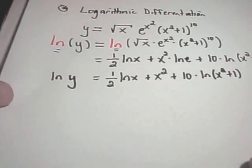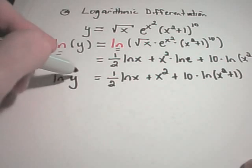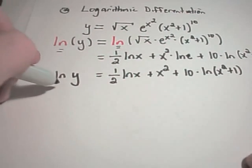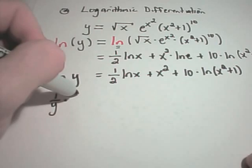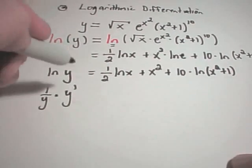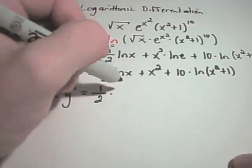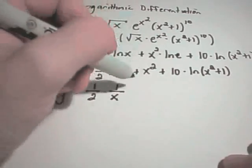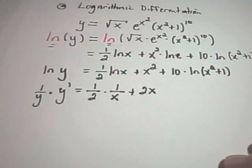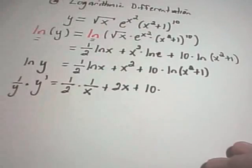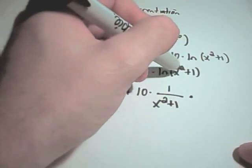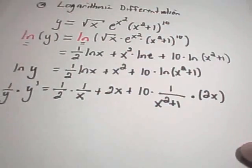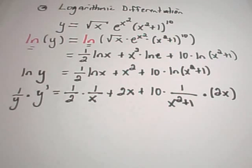Now I take the derivative of both sides with respect to x. You have to remember to use implicit differentiation on the left side. When you do logarithmic differentiation, the derivative of ln of y is one over y, and then you tack on your dy/dx or y-prime term. On the right side, I get one-half times the derivative of ln of x, which is one over x; the derivative of x squared, which is simply two x; and then ten times the derivative of ln of x squared plus one, giving one over x squared plus one, times the chain rule factor two x.